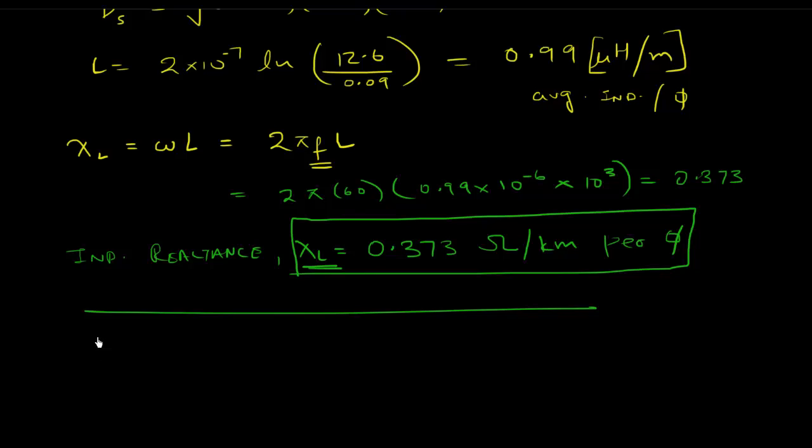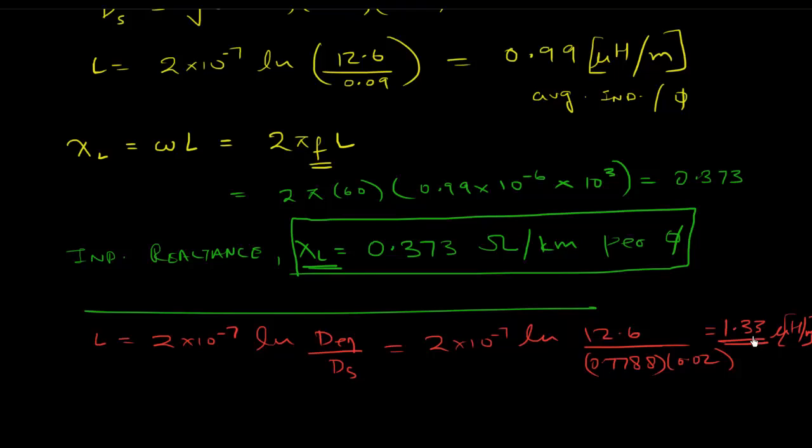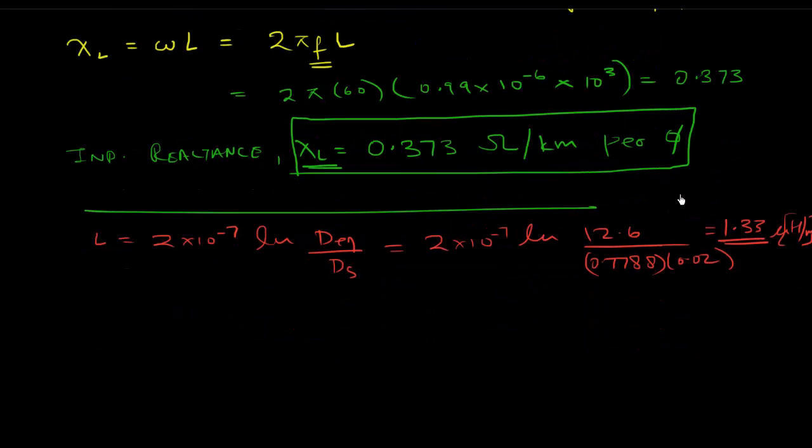Let's have a look at that. Then what you would have is L would simply become 2 into 10 to the power minus 7 ln of d equivalent over ds, which means 2 into 10 to the power minus 7 ln of 12.6. The d equivalent doesn't change. This just becomes 0.7788 times 0.02, and you would get your L value as 1.33 microhenries per meter.